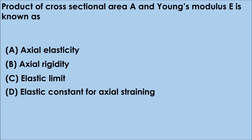Question No. 11: Product of cross-sectional area A and Young's modulus E is known as — Option A. Axial elasticity, B. Axial rigidity, C. Elastic limit, D. Elastic constant for axial straining. The correct answer is option B. Axial rigidity.